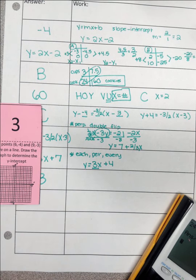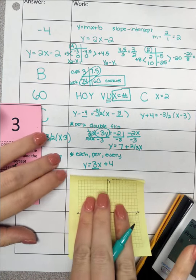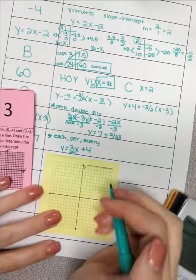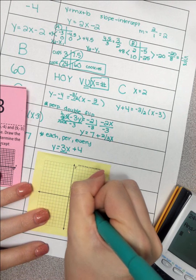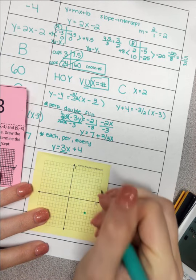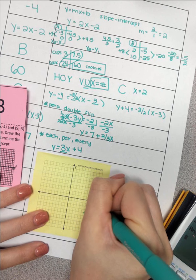Okay, this one I like to use a graph. That graph is a little bit small, so I'm just going to use a different graph right here. They're giving me the points: 6, negative 4. 1, 2, 3, 4, 5, 6, and 9, negative 3.